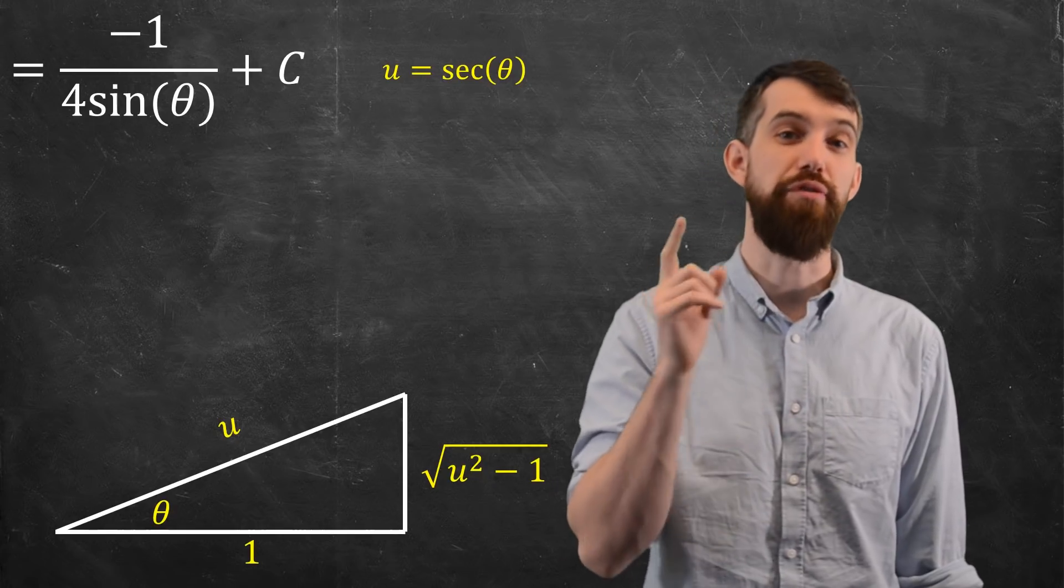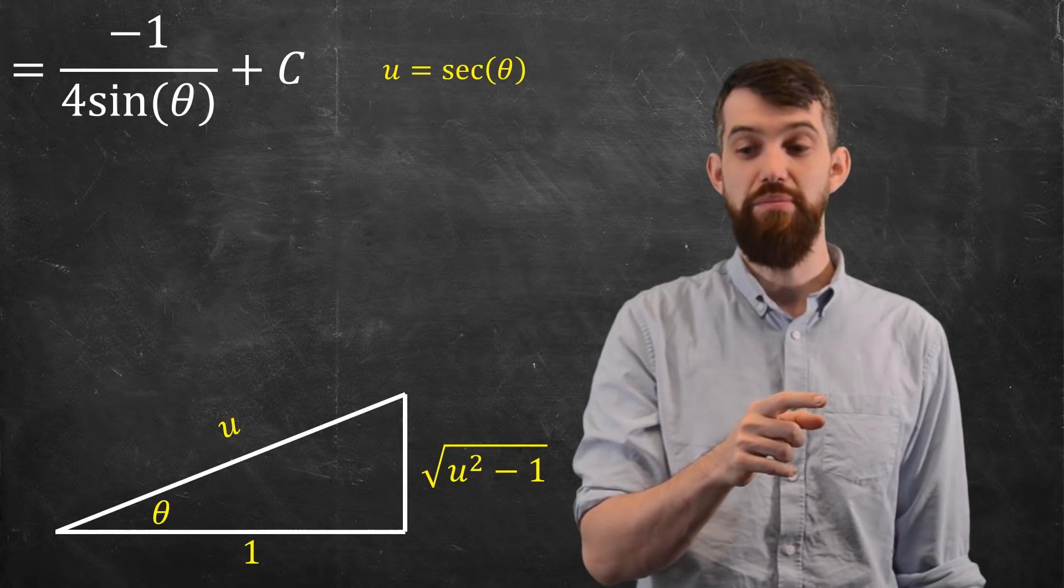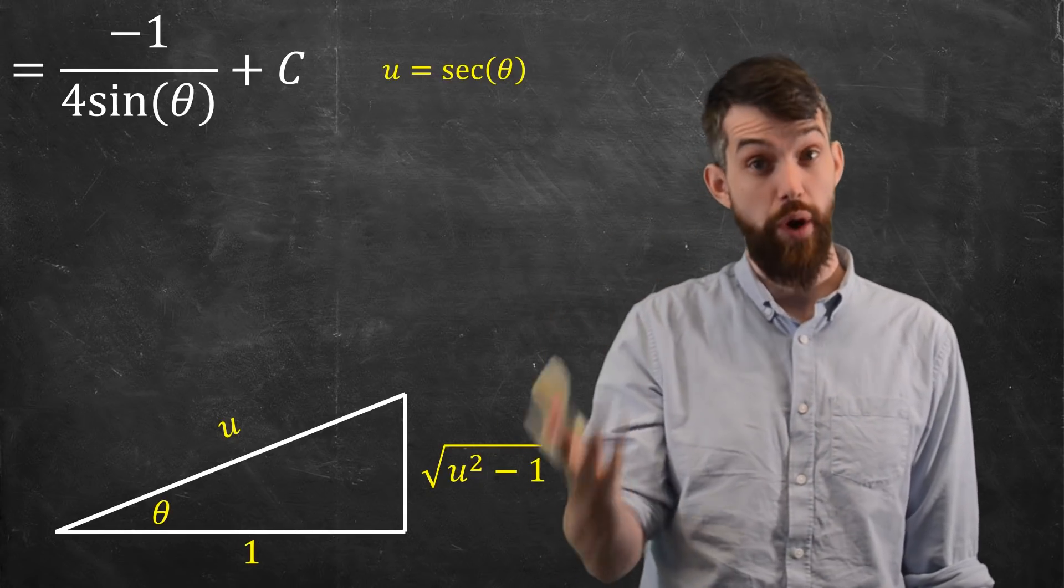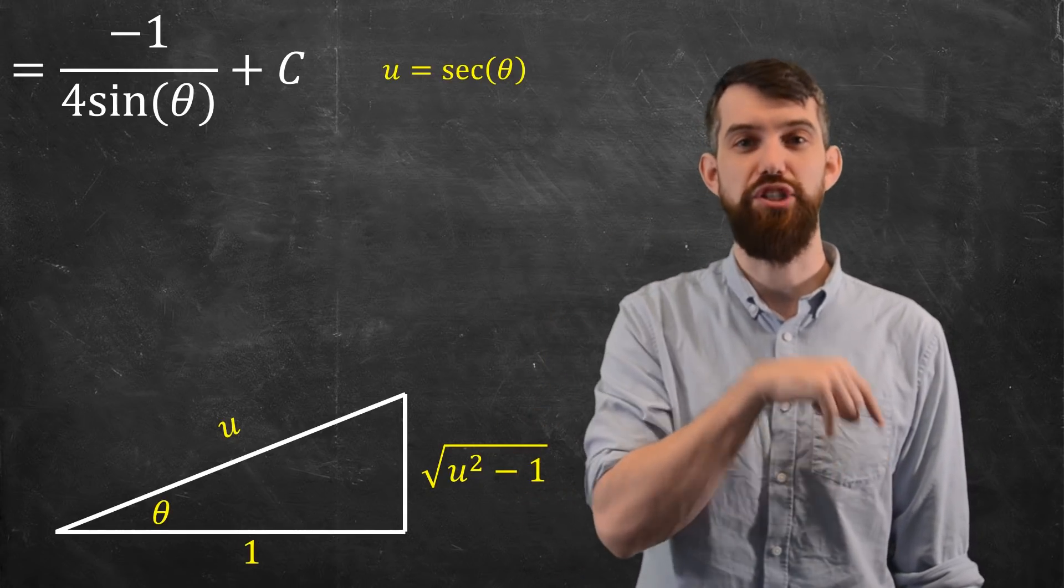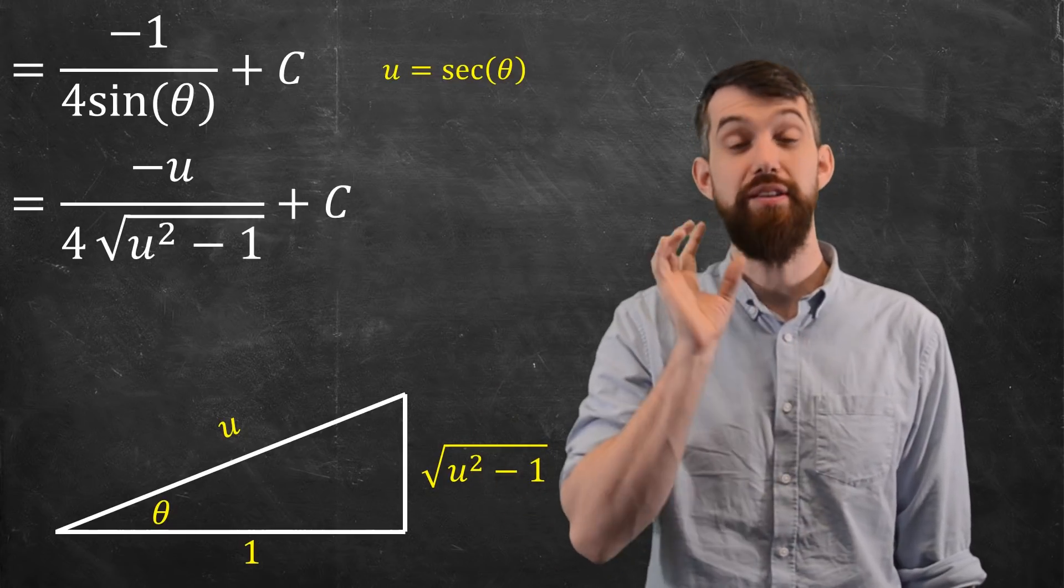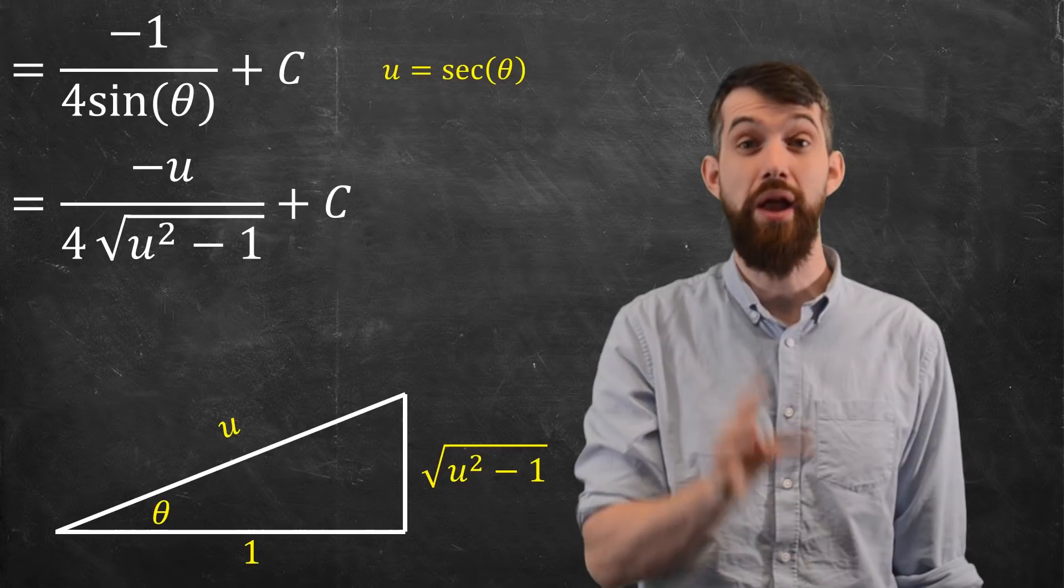And now that I have two sides, I can get the third by Pythagoras. I can say that the opposite is the square root of U squared minus one, and now I can plug it in. What is sine θ? It is going to be the opposite, square root of U squared minus one, divided by the hypotenuse, which is a U. It's on the bottom, so I flip it, and what do I get? Minus U over four, the square root of U squared minus one plus C.